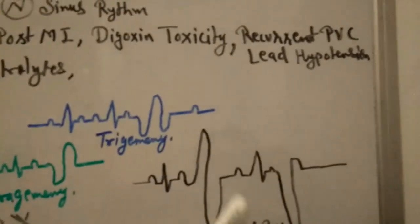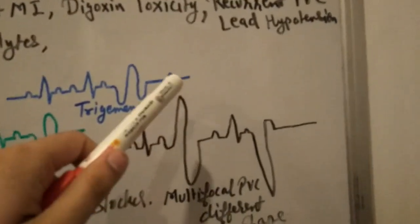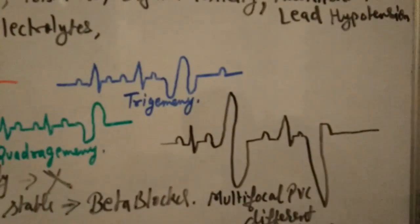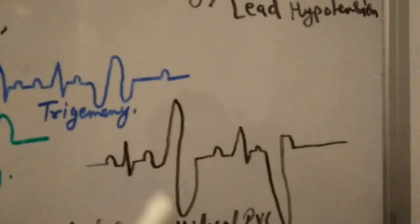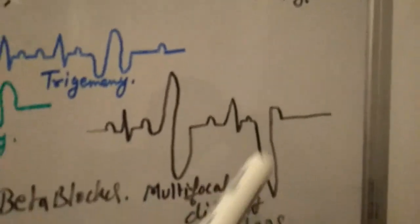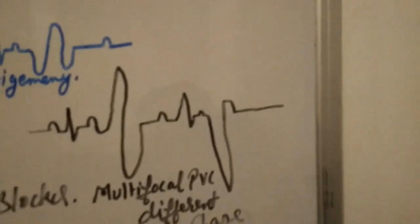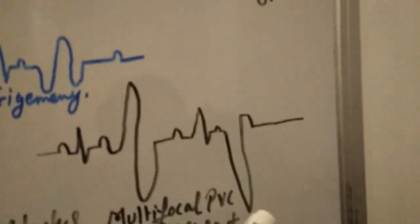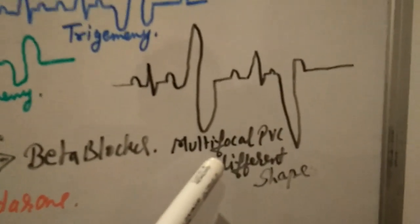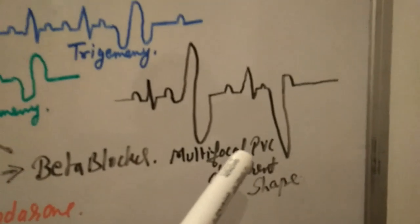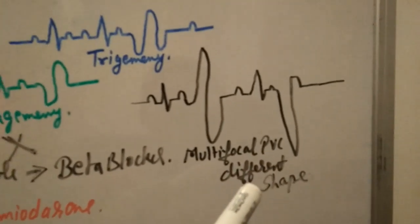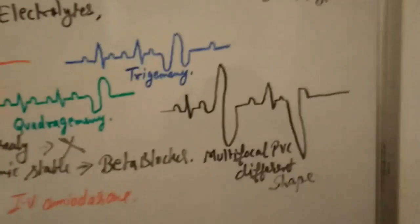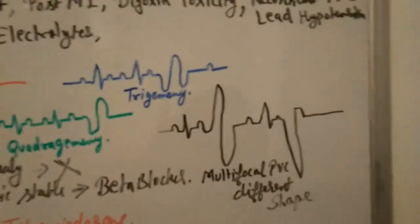Here we see PVCs of different amplitudes appearing in isolation — different shapes on ECG, arising from different sites. This is called multifocal premature ventricular contraction, meaning different foci are generating the abnormal beats.